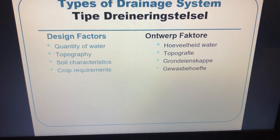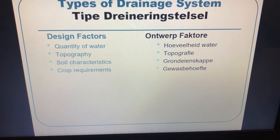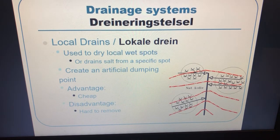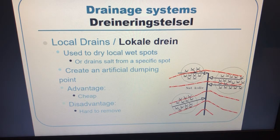Design factors that are important include: the quantity of water you have to drain, the topography, soil characteristics, and the crop requirements. Now we're going to look at different types of drains you can install, and the uses, advantages, and disadvantages of each.